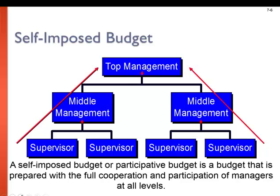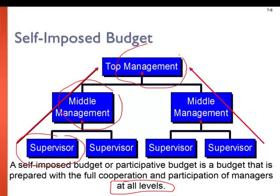Instead, it's really ideal to use what we call a self-imposed budget process. A self-imposed budget, or a participative budget, is a budget that is prepared with the full cooperation and participation of managers at all levels — and that's key, it's all levels: supervisors, middle management, top management, everybody. This way, everyone signs up for the budgets that are created and are well aware of the goals set before them.